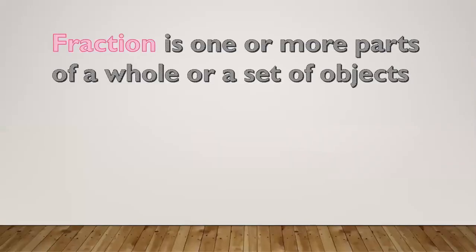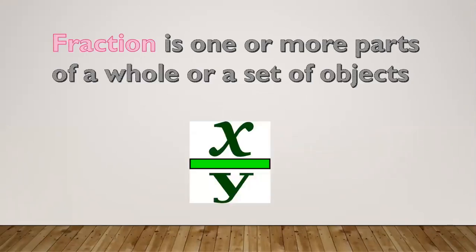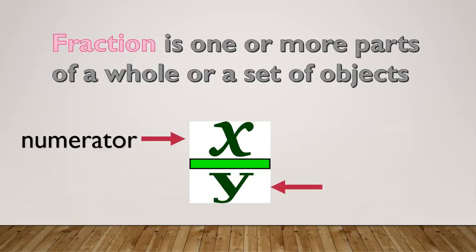A fraction is one or more parts of a whole or a set of objects. For example, x over y — we divide an object into y parts and x is the part taken. So x is the numerator and y is the denominator. The denominator tells us how many times an object is divided.